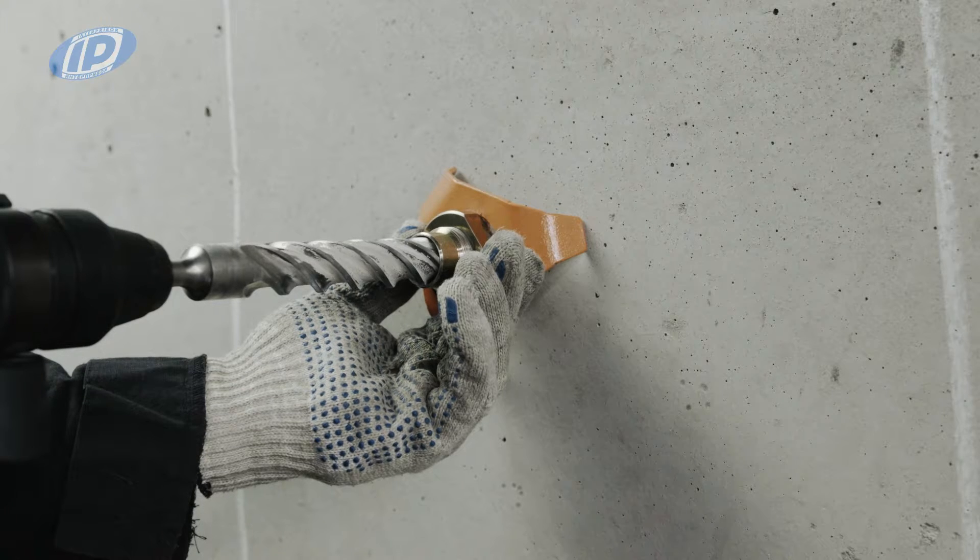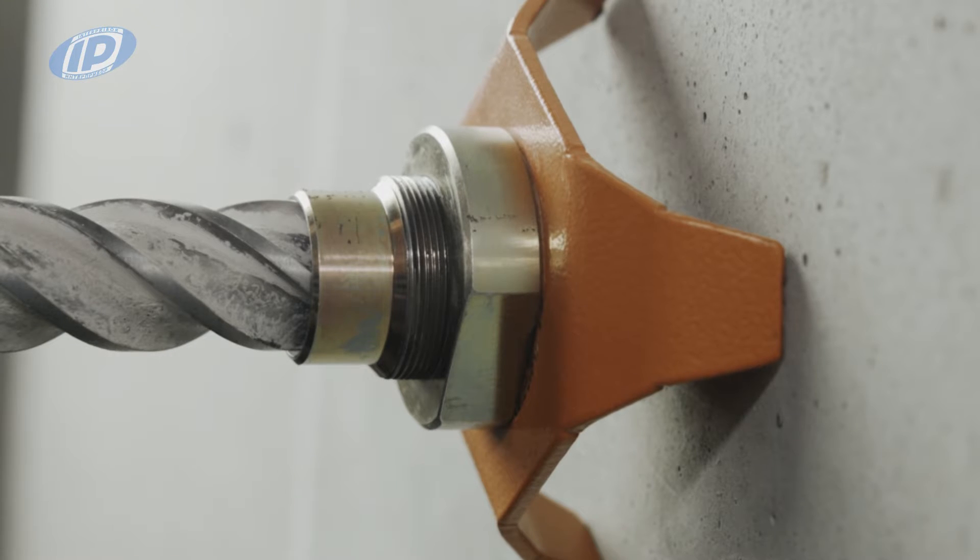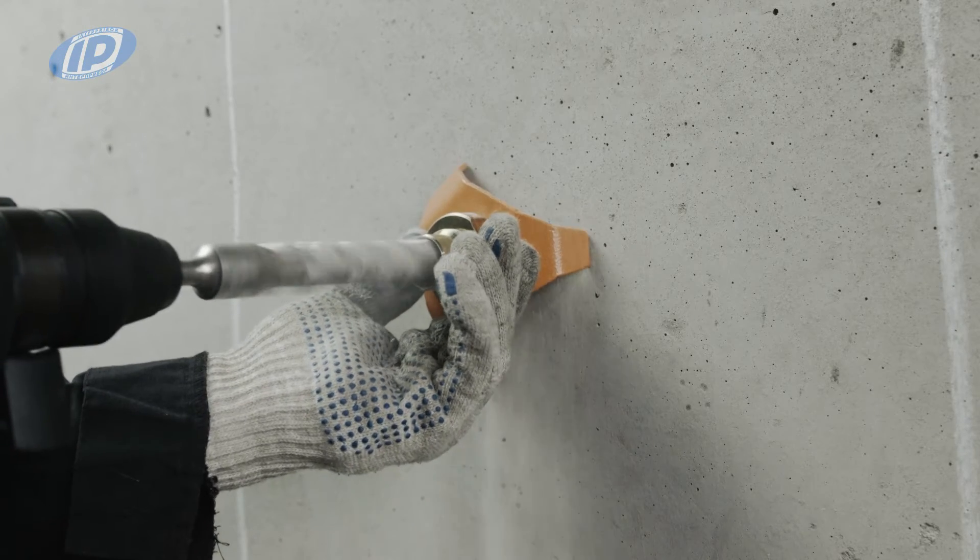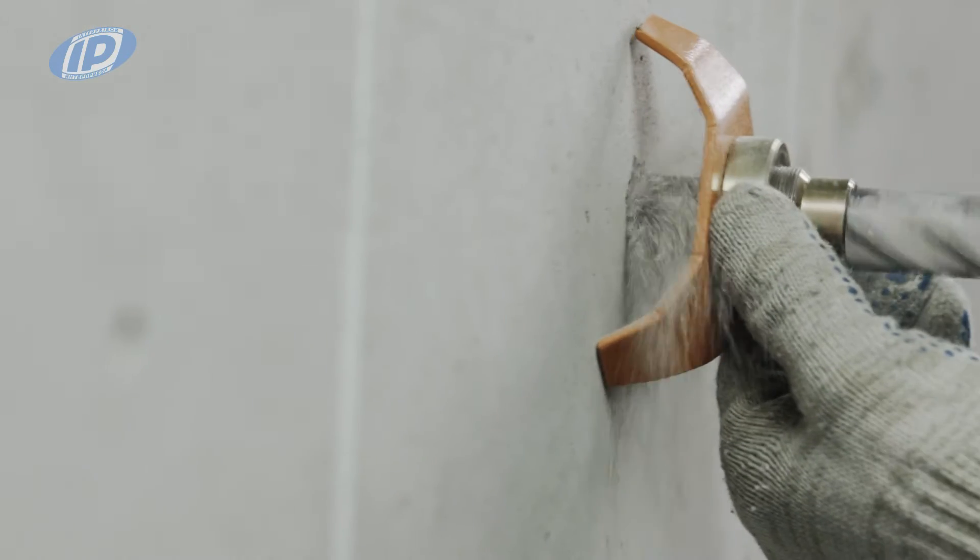During the drilling process, the drill guide must be held tightly against the surface of the concrete at three points. To make a borehole with a diameter of 24 millimeters, use a 24 millimeter drill.